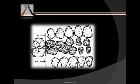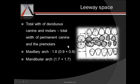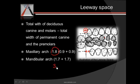Next we'll be talking about leeway space. In this diagram, the deciduous canine, deciduous first molar, and second molar are replaced by the permanent canine and premolars. The total dimension of the deciduous canine and molars is more than the total dimension of the permanent canine and premolars. This extra space is the leeway space — defined as the total width of deciduous canine and molars minus the total width of permanent canine and premolars. In the maxillary arch it is 1.8mm, and in the mandibular arch it is 3.4mm.